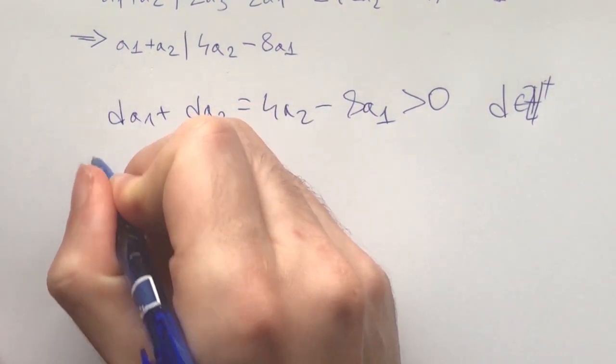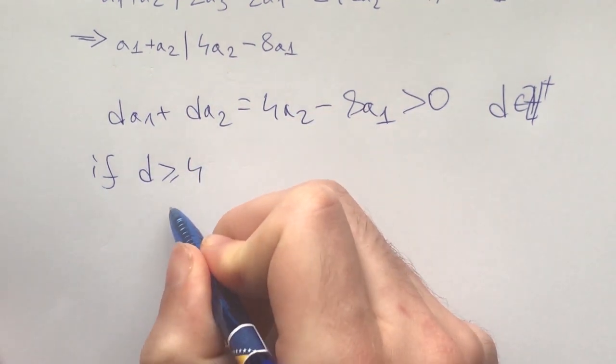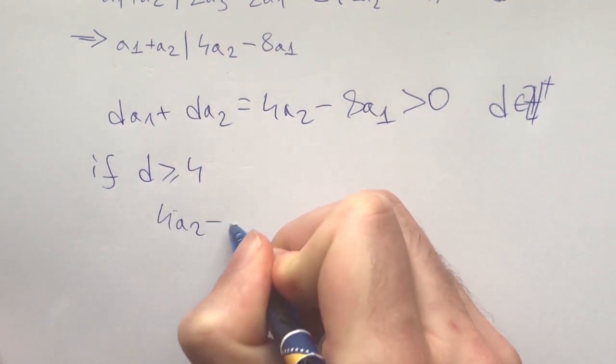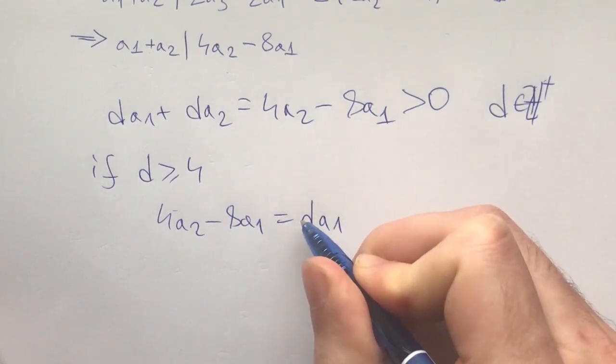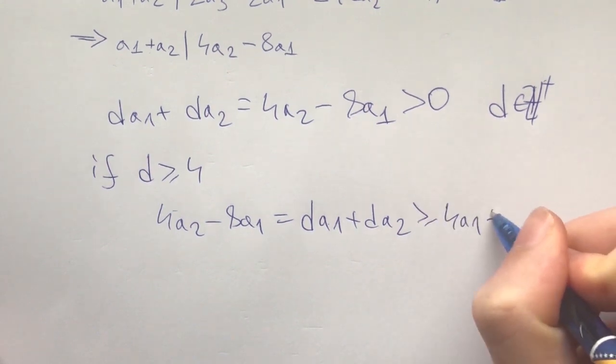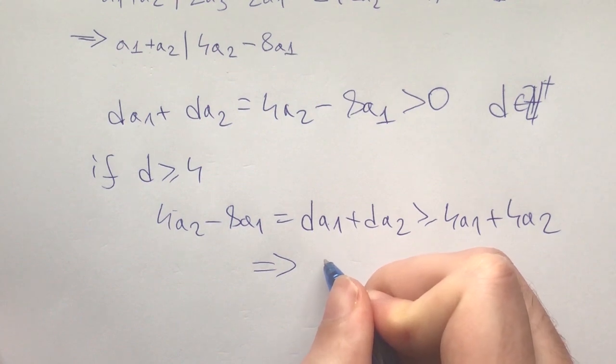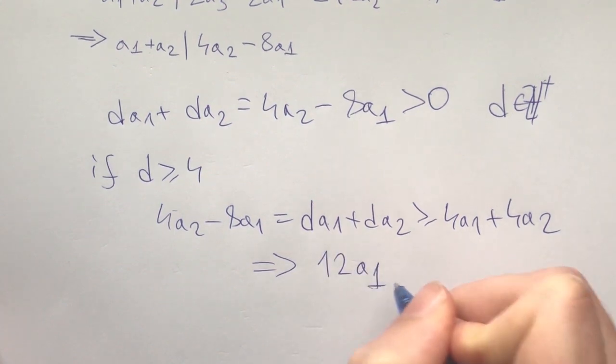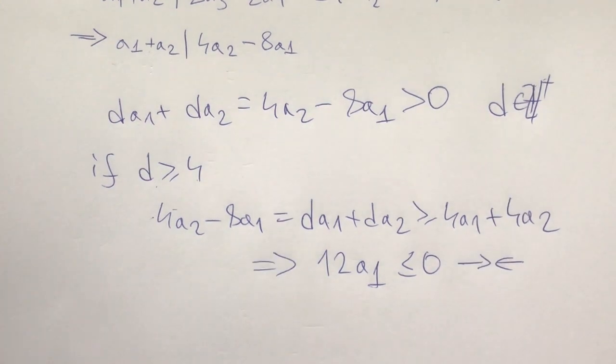Because this is greater than zero, we know d is a positive integer. Now same as before, if d were greater than or equal to 4, we would get 4a2 - 8a1 = d·a1 + d·a2 ≥ 4a1 + 4a2, which would imply that 12a1 ≤ 0, which is a contradiction.